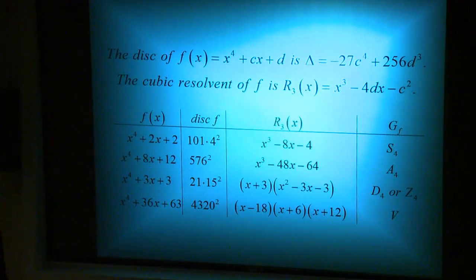As a result, there are only four groups that any irreducible quartic can have. Those are identified here by S4, A4, D4, or the Klein four group, which has the symbol V.